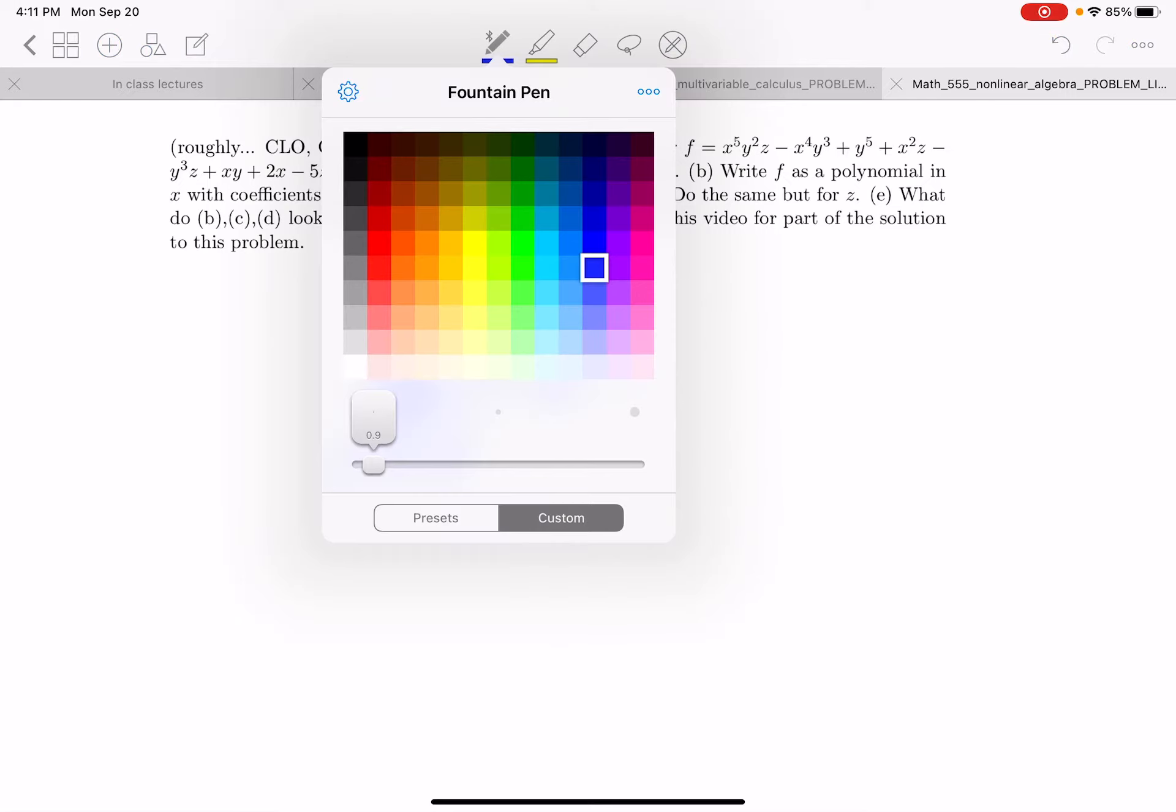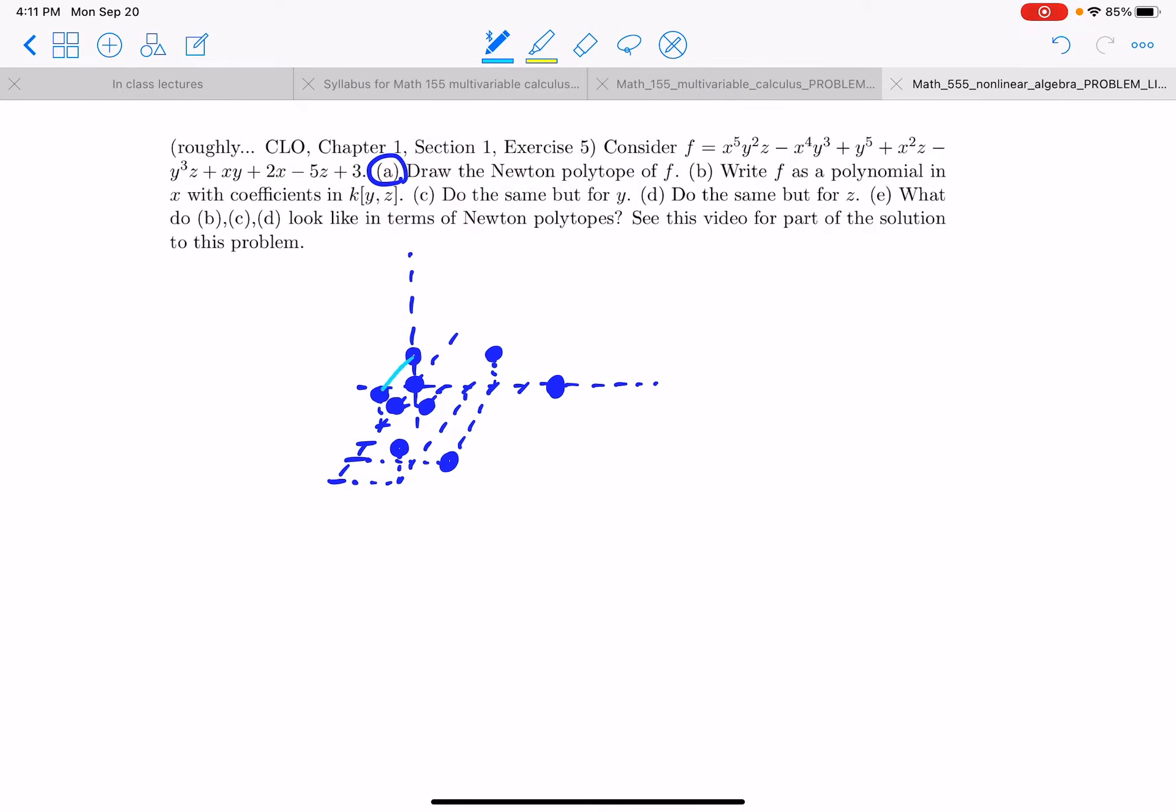Okay so the Newton polytope is somehow the convex hull of all these things. So it forms some sort of a polytope in three-dimensional space here.